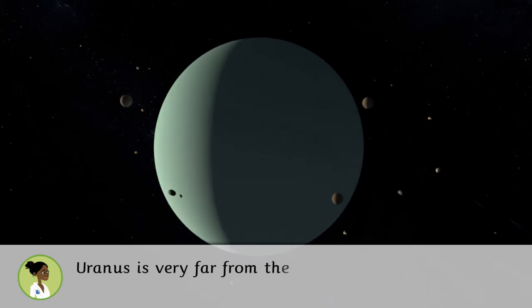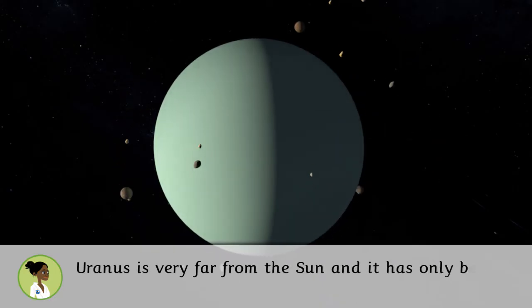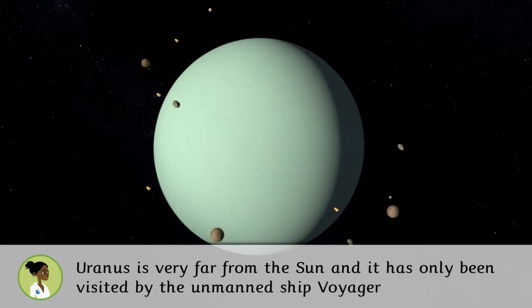Uranus is very far from the sun and has only been visited by the unmanned ship Voyager 2.